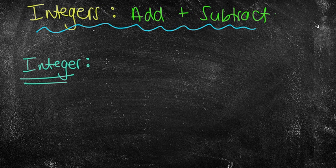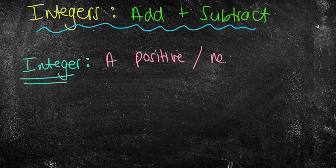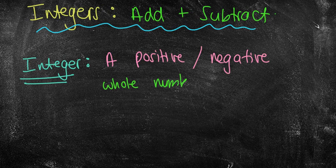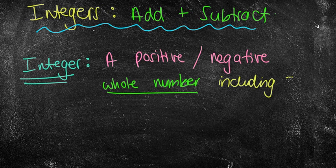Hopefully you might say that an integer is a positive, a positive or a negative—now this is the clinch word here—whole number. Okay, whole number, but also it includes zero.